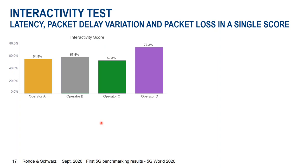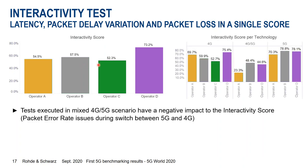Now focusing on the interactivity test: the interactivity score combines latency, packet delay variation, and packet loss into a single score. Operator D wins with 73%, with a large margin of 15–20% over all other operators. Looking at the breakdown per technology, the LTE and 5G scores for Operators A and D are fairly similar. However, the mixed 4G/5G scenario is crucial — tests that start in one technology and finalize in another tend to produce a packet error during the switch, which strongly degrades the interactivity score. Operator A appears to have many such mixed-scenario cases, which pulls down its interactivity score significantly.